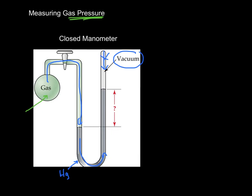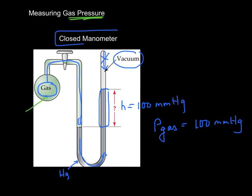So let's say the height of this column right here is 100 millimeters of mercury. What's supporting this column? It's being supported by the gas pressure. So whatever that gas is, we know the pressure of that gas is 100 millimeters of mercury. And this is what we call a closed manometer.